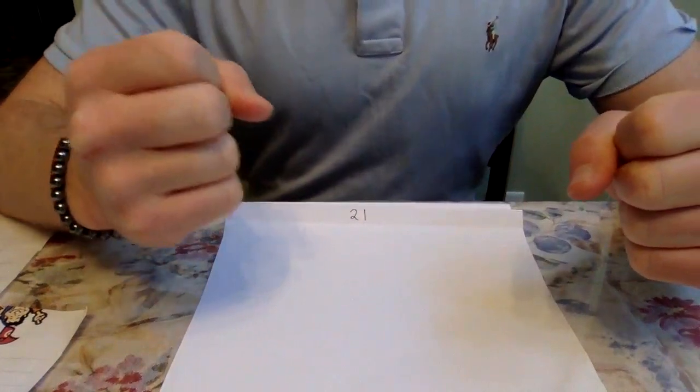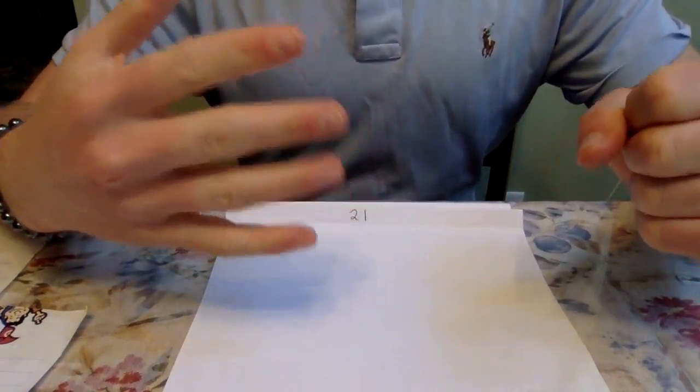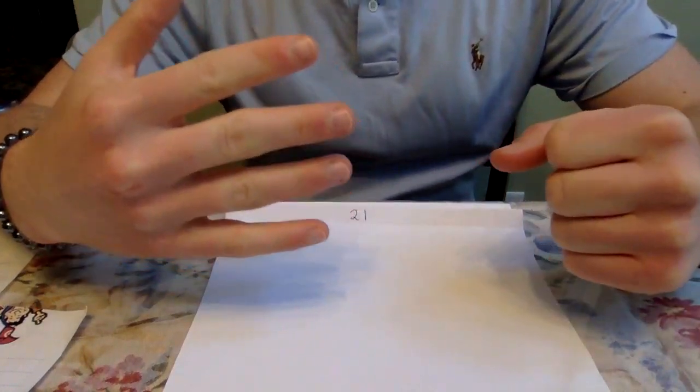Each person will throw either one, two, three, four, or five and you count on both hands until you get to 21.